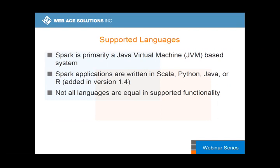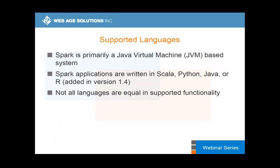Spark was written in Scala — it's a primary JVM-based system. Scala gets compiled into bytecode that gets interpreted in the JVM. Later, Python was added as a supported programming language. Currently people have a choice between Scala and Python. Java is now supported at version 8, though its future is uncertain.